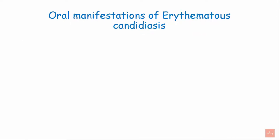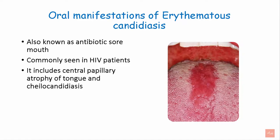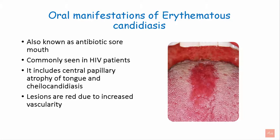Moving on to the oral manifestations of erythematous candidiasis. It is also known as antibiotic sore mouth and is commonly seen in HIV patients. It includes central papillary atrophy of the tongue and cheilitis candidiasis. Lesions are red due to increased vascularity. It occurs as a sequel to a course of broad-spectrum antibiotics or corticosteroids. The differential diagnosis can be erythroplakia, which has well-demarcated borders, whereas candidiasis has diffuse borders.